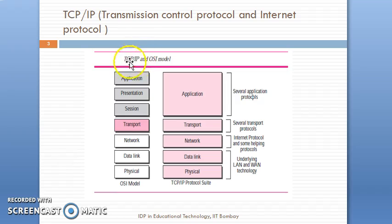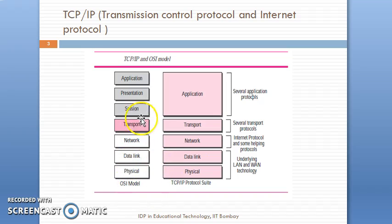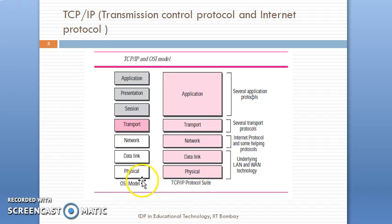How the TCP/IP reference model is different from the OSI model can be understood from this diagram. If you look carefully, the left side is the OSI model and the right side indicates the TCP/IP model. Seven layers are used in OSI, while five layers are used in TCP/IP.